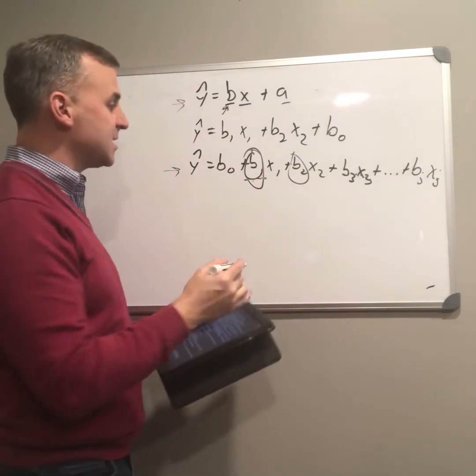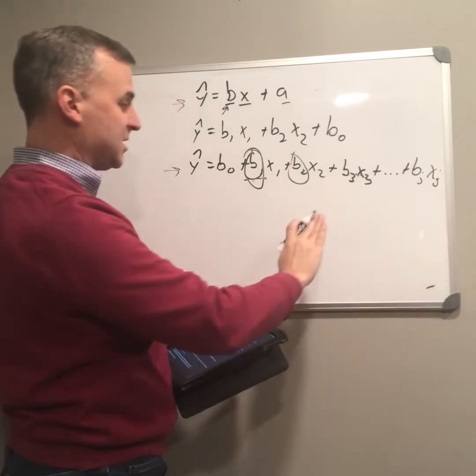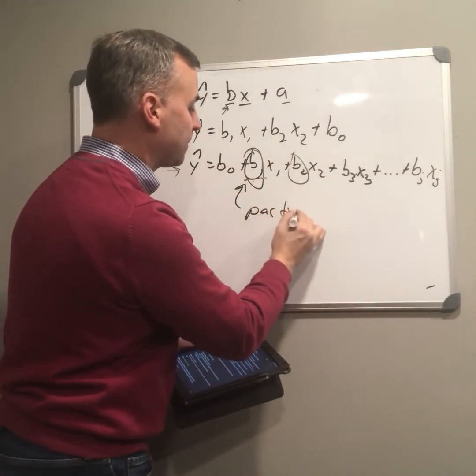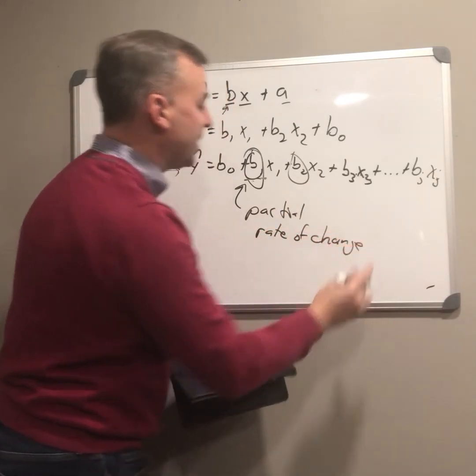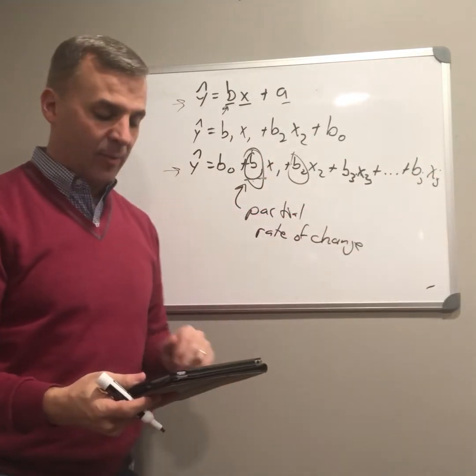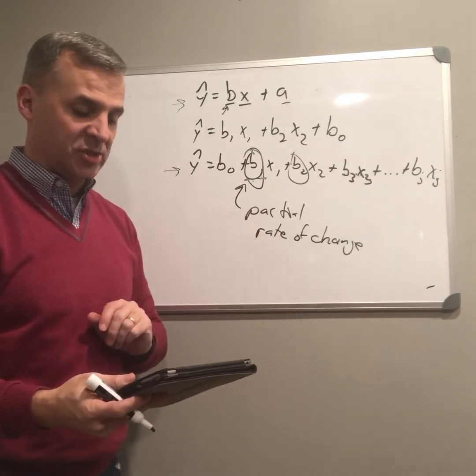So it only tells us the rate of change as I, what we call, partial out all these other ones. So this is sometimes called the partial rate of change. Because it's the rate of change when I hold these other variables constant. It's not quite as straightforward as just being a rate of change in and of itself.